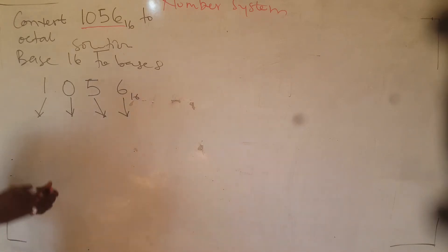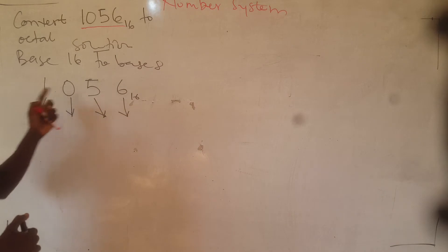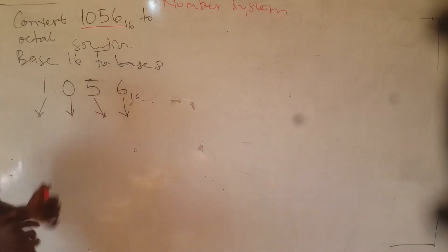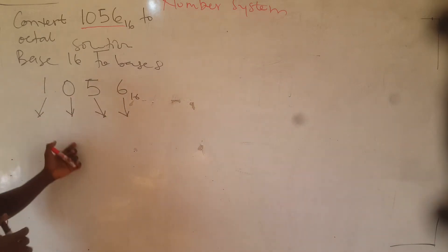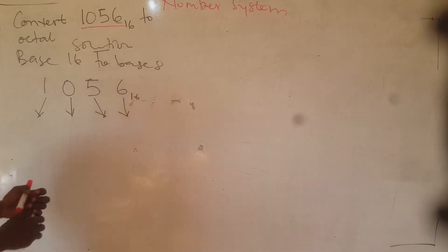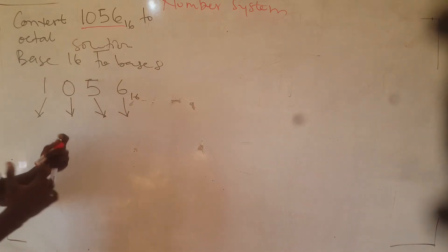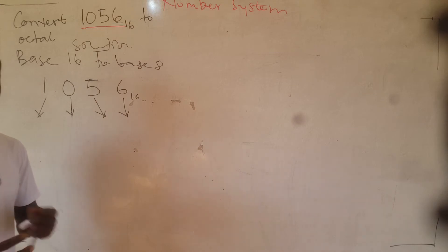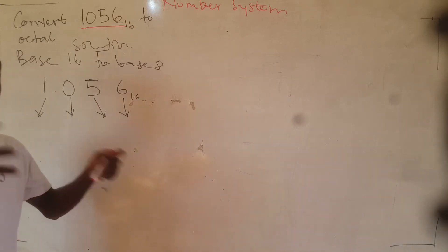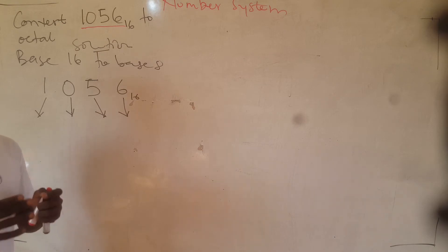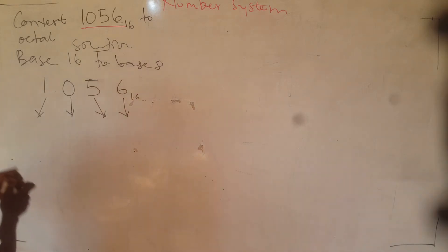We have to convert each of the digits here using four bits. We have to write each of the digits and represent them with four bits or four binary digits. What I'm doing is first converting this to binary, and then I'll convert it from binary to octal. Binary means I'm converting to base 2.